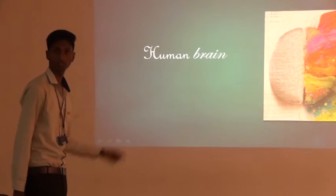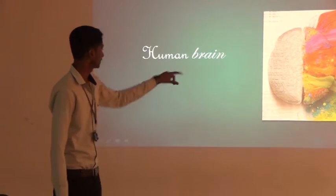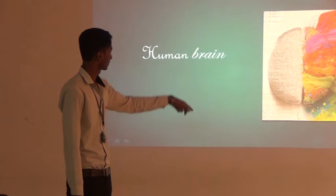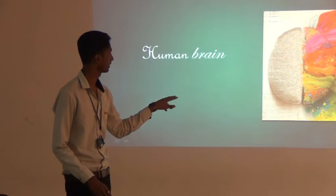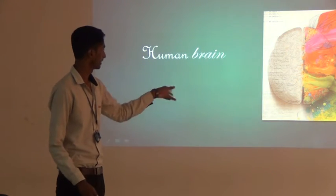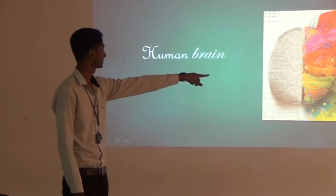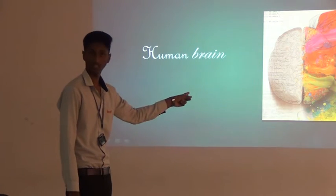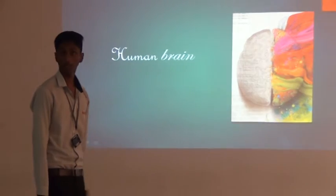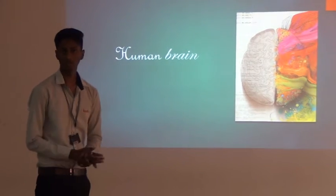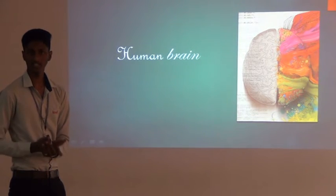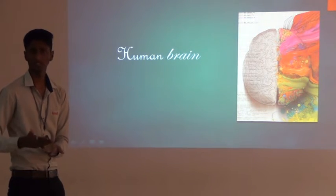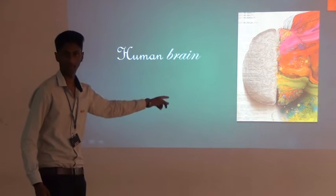Human brain. If we cut the human brain symmetrically, we may see both hemispheres equally, but their functions are different. That is the right brain and this is the left brain. The left brain is used to think about logical thinking, arithmetic, reasoning, language, and related subjects.